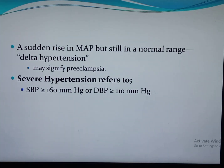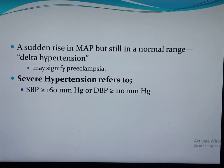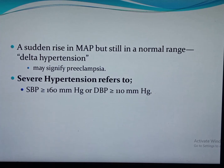Severe hypertension is defined as systolic blood pressure greater than or equal to 160 mmHg or diastolic blood pressure greater than or equal to 110 mmHg on two occasions at least 30 minutes apart, or a single measurement if the woman is already taking antihypertensive drugs.